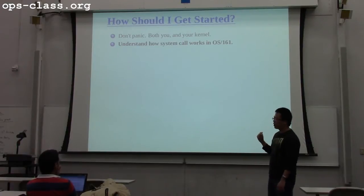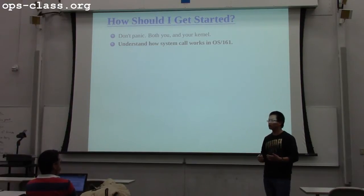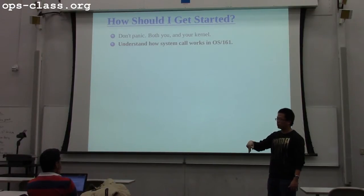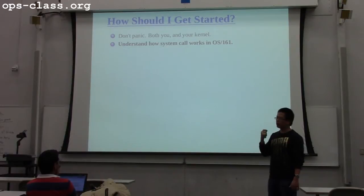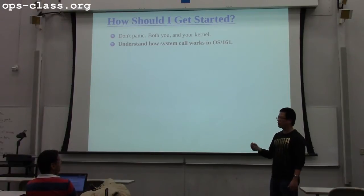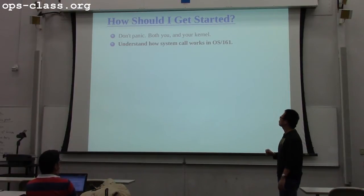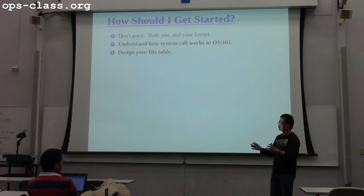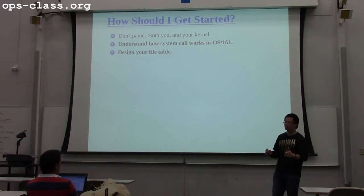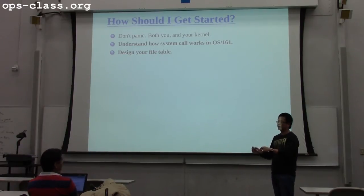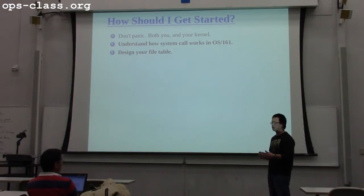You need to understand how the syscall system works — specifically, how does the user-space open function get to the kernel, get to sys_open, how do you actually open the file and return the file descriptor to user space. The whole flow from user space to kernel mode: make the syscall and go back to user mode. You also want to design your file subsystem first, since the core of the file subsystem is the file table. What does the file table look like? What's the entry of the file table? How do you find available file descriptors?